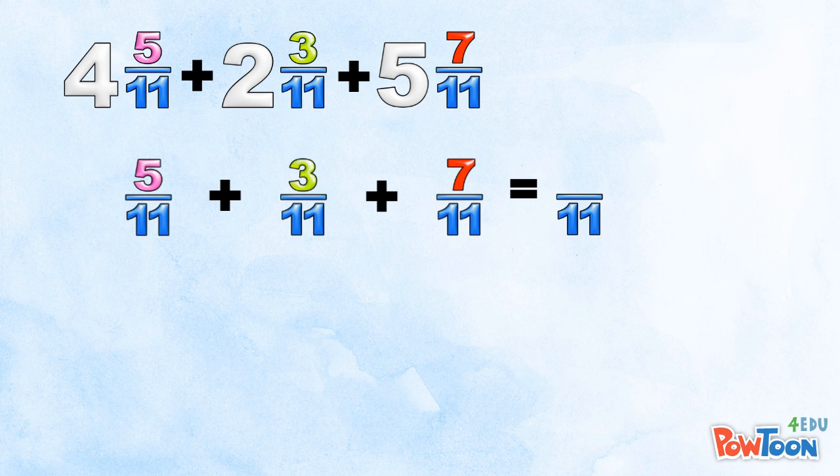Next, we add the numerators. 5 plus 3 plus 7. 7 plus 3 is 10, plus 5 is 15. 15 over 11. It's an improper fraction. We can't leave it like that.